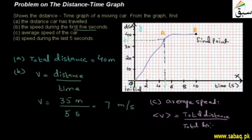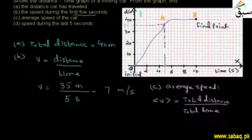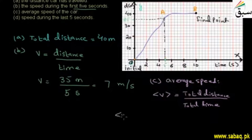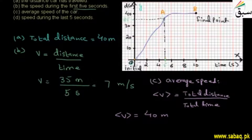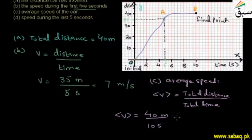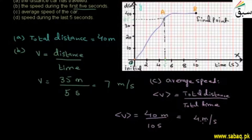The journey started from O point to B point. The total distance travelled from O to B is 40 meters. The total time for B point is 10 seconds. So dividing 40 meters by 10 seconds gives an answer of 4 meters per second. That means the car is moving at an average speed of 4 meters per second.